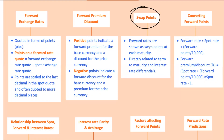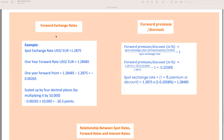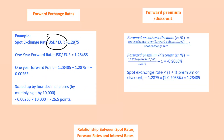Swap points are the forward points quoted for each maturity. The longer the maturity or the wider the interest rate differential, the greater the forward points. To convert these points into a forward rate quote, use this formula: forward rate equals spot exchange rate plus forward points divided by 10,000. If you need to calculate the forward premium or discount as a percentage, there's a formula for that too. For example, if the spot rate for USD per euro is 1.2875 and the forward rate is 1.28485, the forward points equal minus 0.00265.